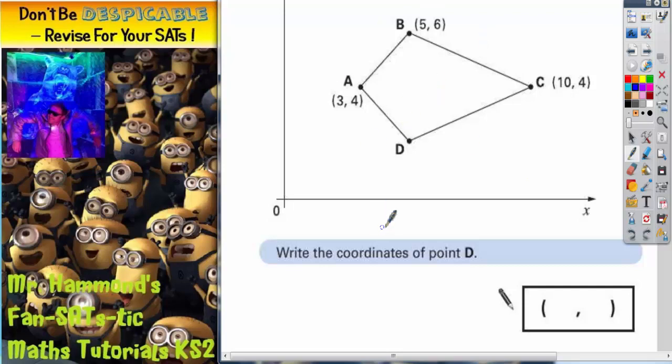How are we going to do this? Well, we need to remember that with any coordinate, the first number before the comma tells you how far across to go, and the second number after the comma tells you how far up to go. It's along the corridor and up the stairs.